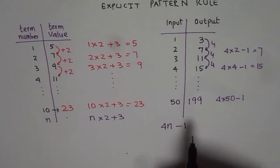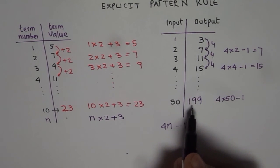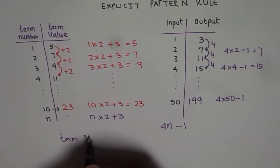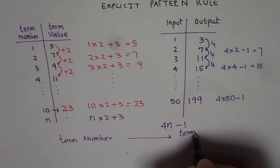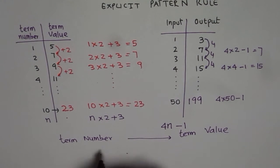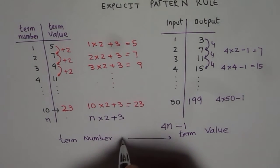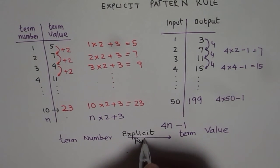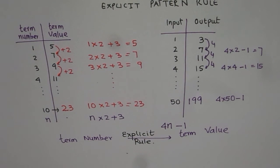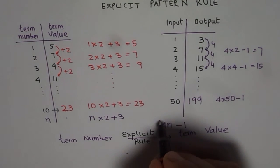I hope you appreciate how we developed our rule to find the output for a given input. So whenever you can relate the term number with its value, with the term value directly, then we call this as an explicit rule.